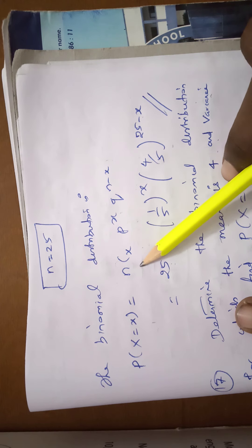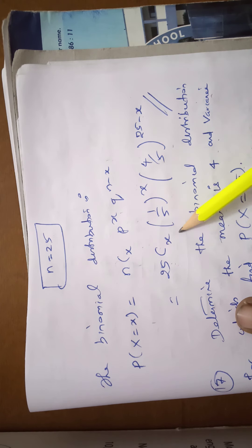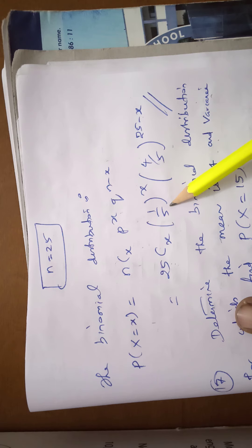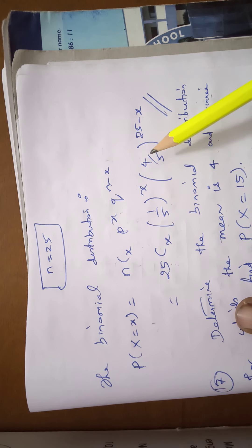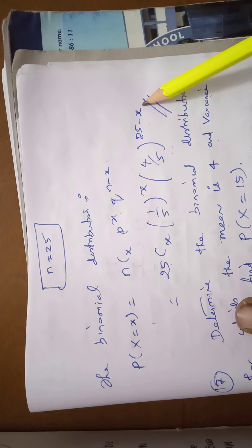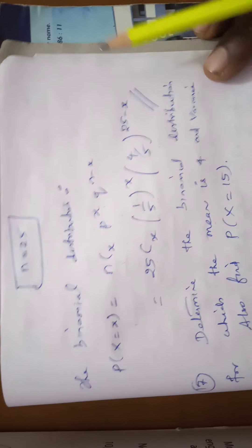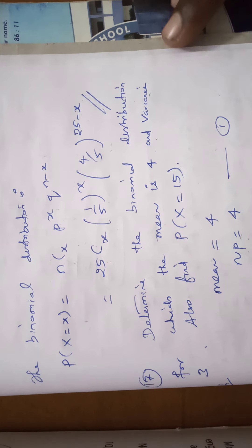N value is 25, so the distribution is P(X = x) = 25Cx · (1/5)^x · (4/5)^(25−x). This is the solution of the problem.